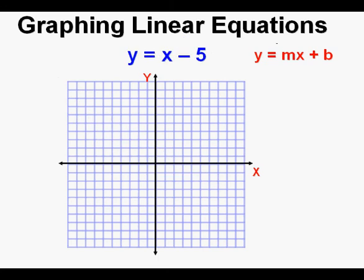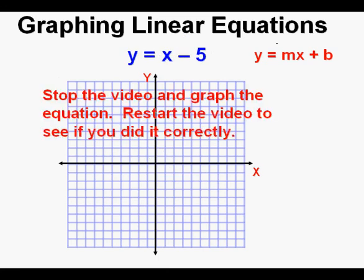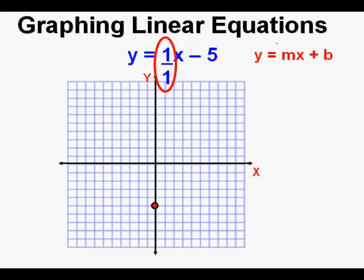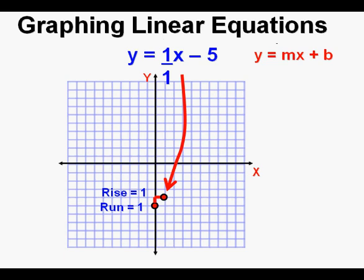Let's look at this last equation. Stop the video and graph the equation, then restart it to see if you worked it correctly. First, mark the y-intercept at negative 5. Since the x-term is just x, we draw in the slope of 1 over 1 — a rise of positive 1 and a run of positive 1. We mark our second point there, and now we have two points to draw the line.